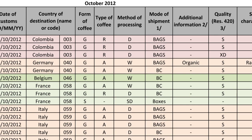In order to do this, we need to group the data by country of destination in accordance with the ICO country code and by form and type of coffee. The results are shown here. It's now much easier to identify each of the fields by country of destination based on the form and type of coffee, the method of processing, and any relevant additional information.